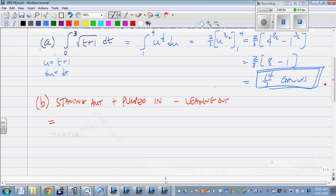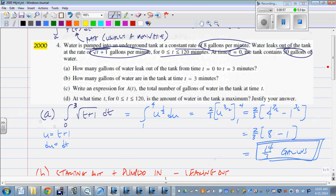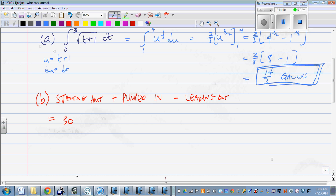So our starting amount, if we look back at the problem, tells us that T equals zero, there's 30 gallons. So we have 30 to start with.